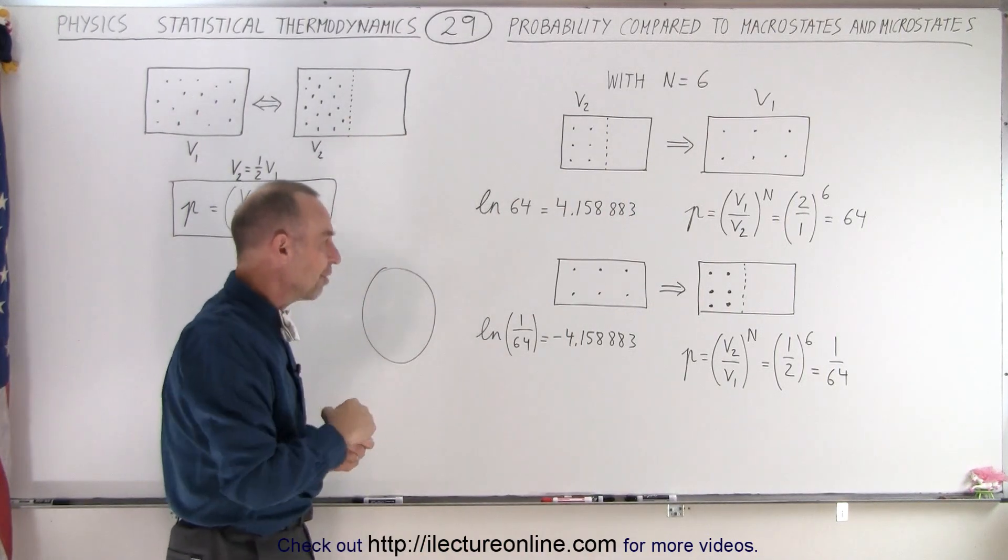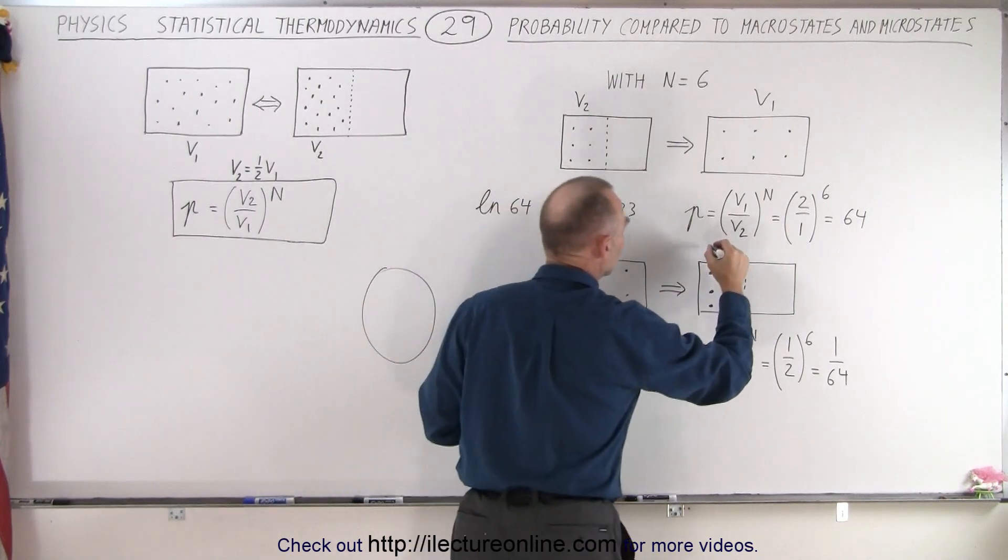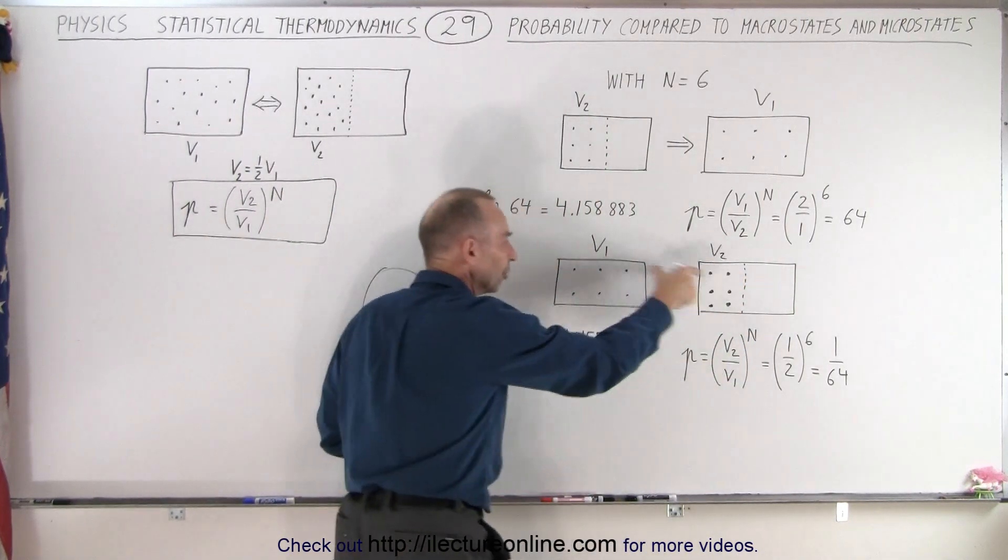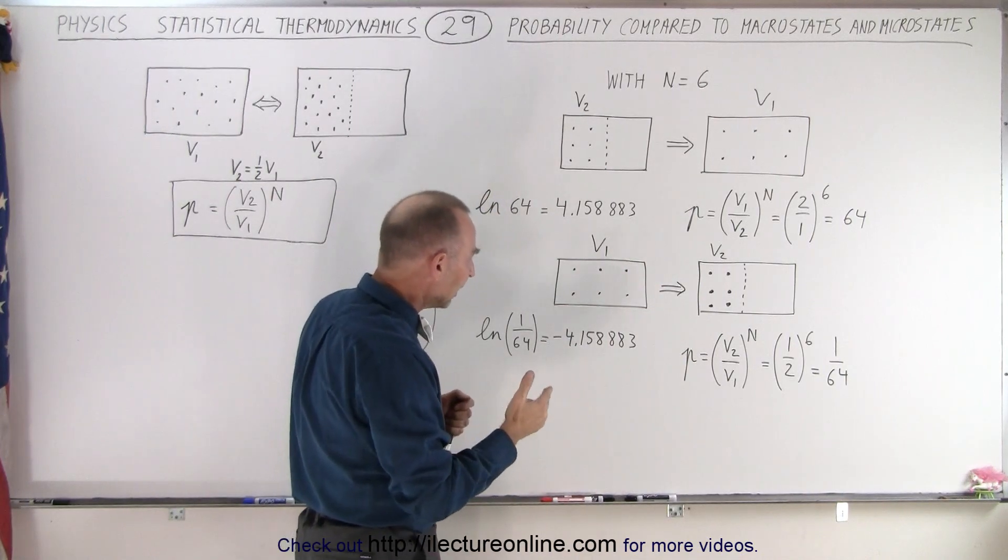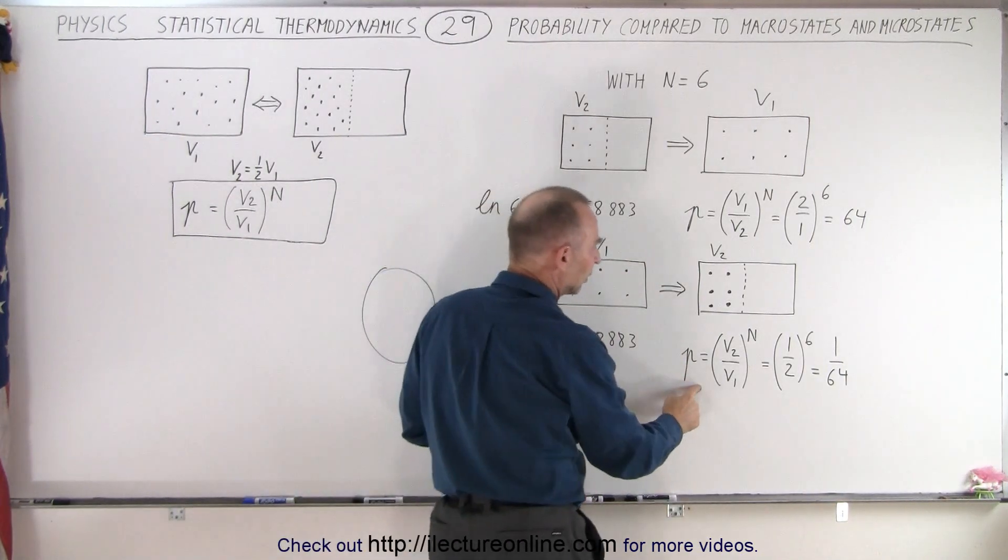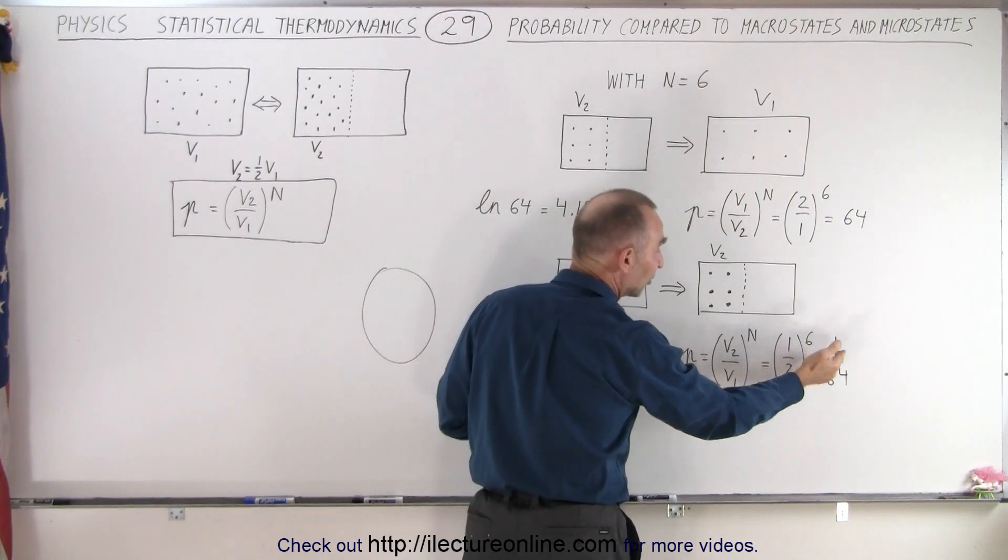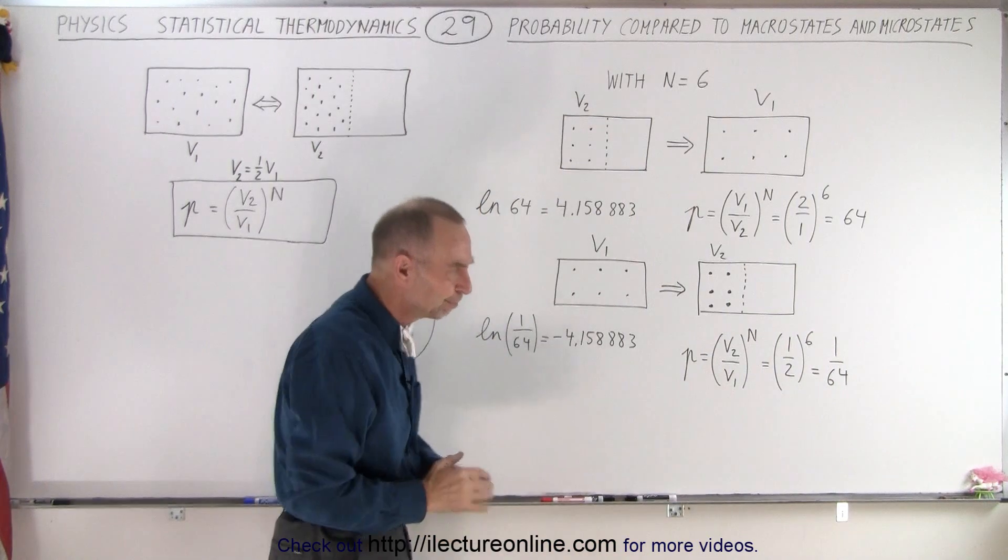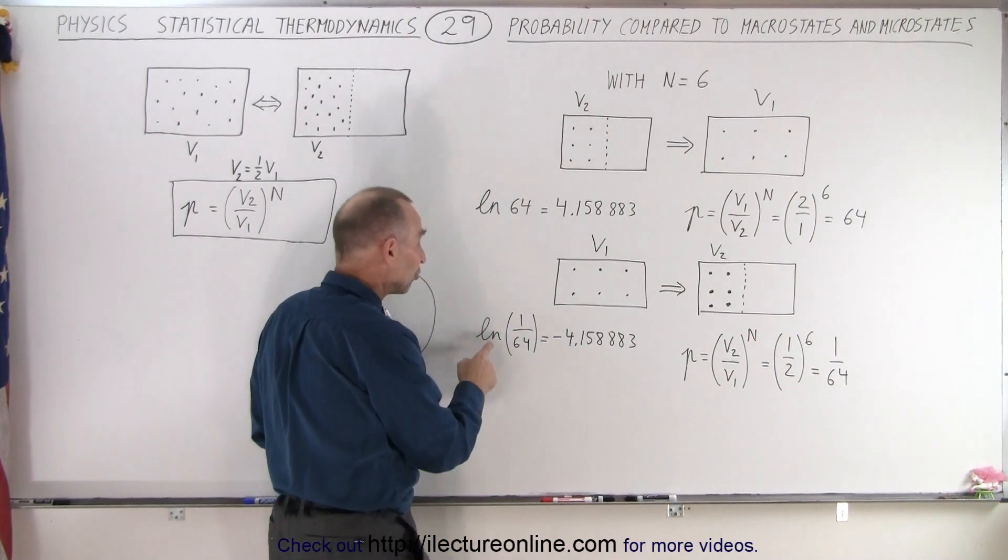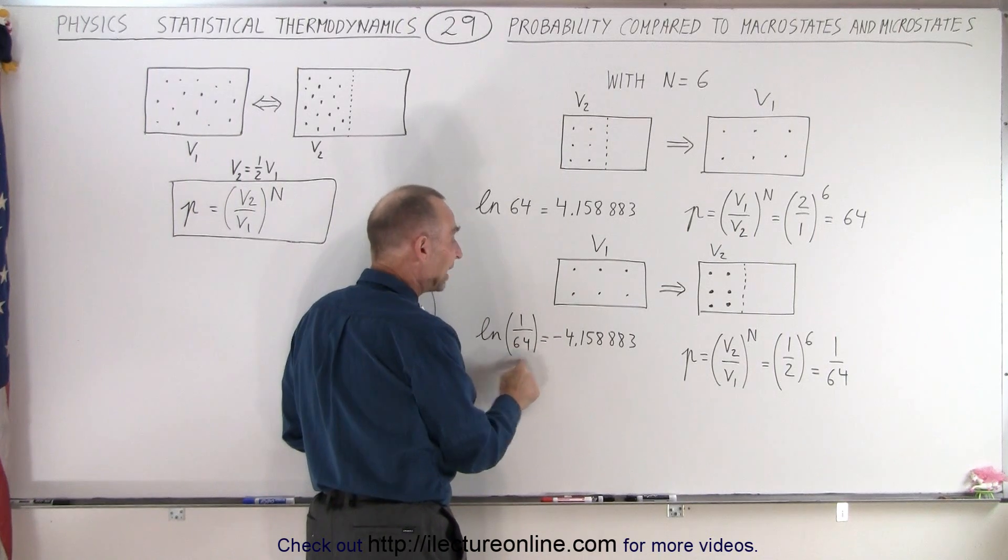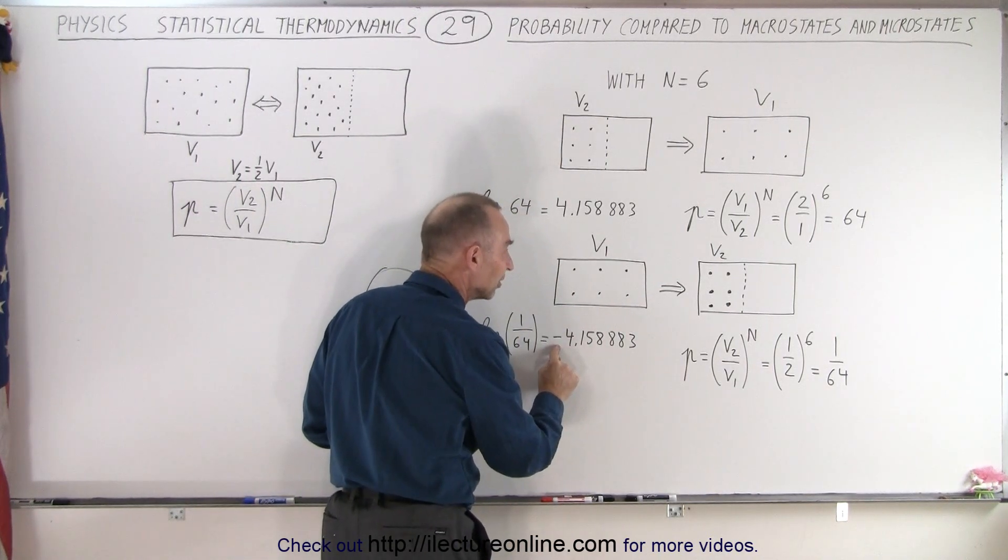Now let's go the other direction. We have a situation where we go from a larger volume, V1, into a smaller volume, V2. V2 is just half of V1. Now notice, that means that the probability of that occurring is V2 over V1 to the n power, or one half to the 6th power, which is 1 over 64. It's kind of the inverse of probability. And if we now take the natural log of 1 over 64, we get the very same number, but with a negative sign in front of it.